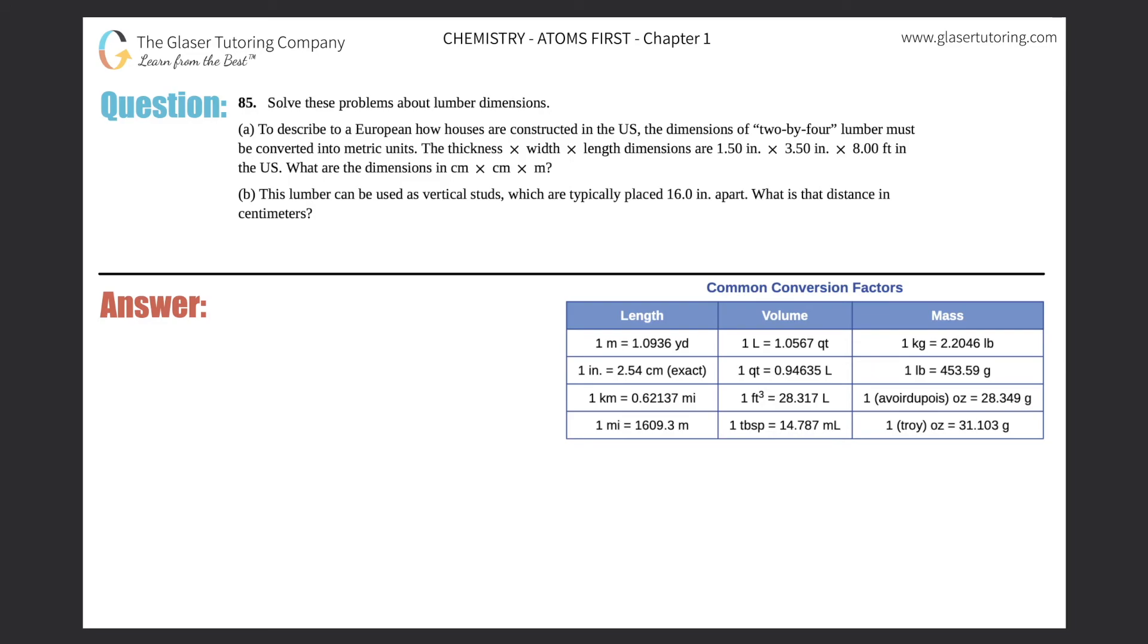Number 85: solve these problems about lumber dimensions. Okay, I see a and b, so I think I have enough room here. I'll put a over here and maybe I'll put b over here. Part a: to describe to a European how houses are constructed in the US, the dimensions of two by four lumber must be converted into metric units. The thickness times width times length dimensions are 1.5 inches times 3.5 inches times 8.00 feet in the US.